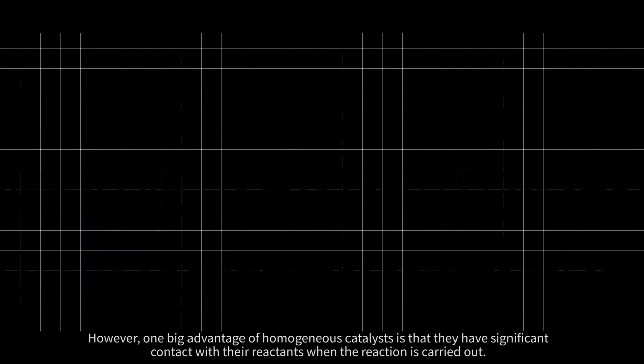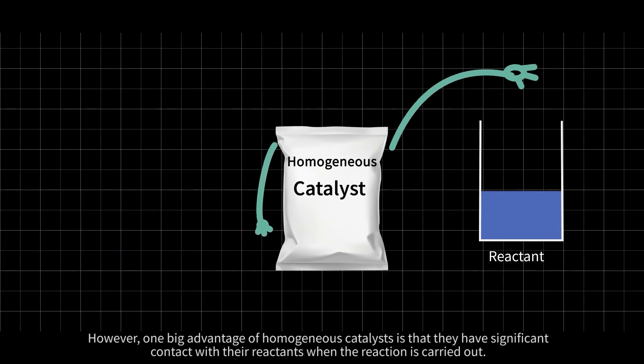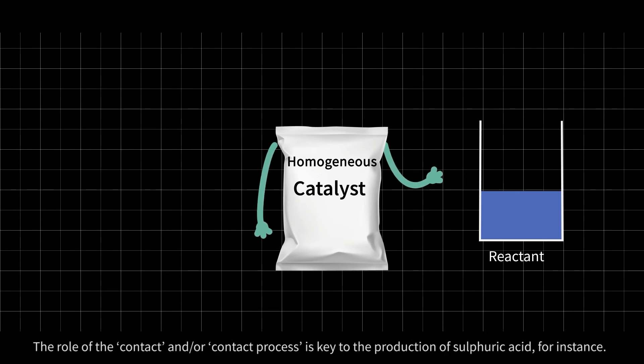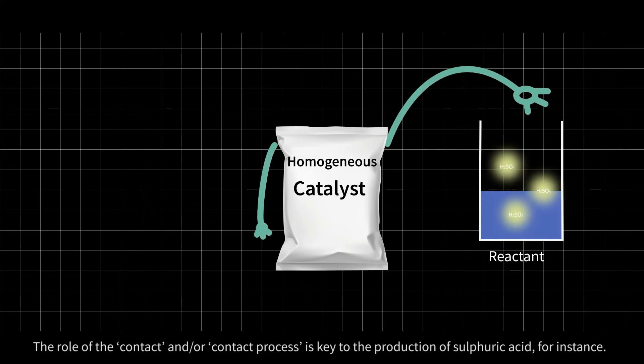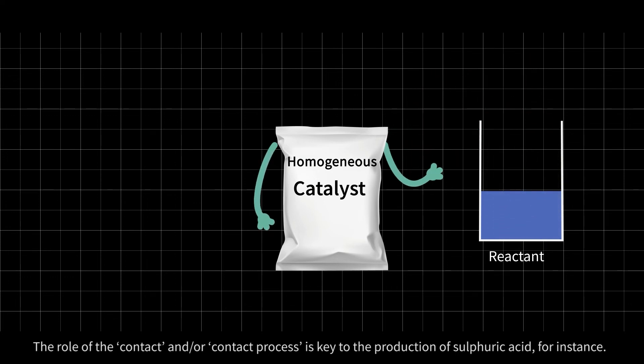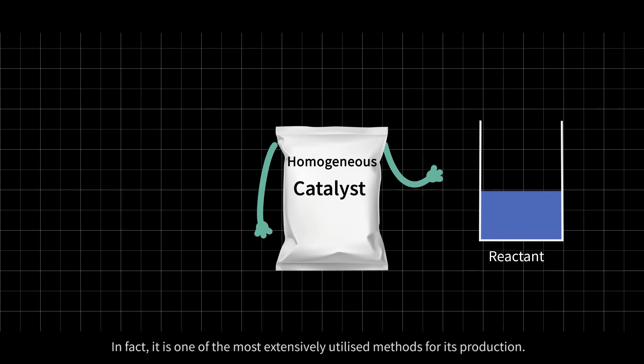However, one big advantage of homogeneous catalysts is that they have significant contact with their reactants when the reaction is carried out. The role of the contact and/or contact process is key to the production of sulfuric acid, for instance. In fact, it is one of the most extensively utilized methods for its production.